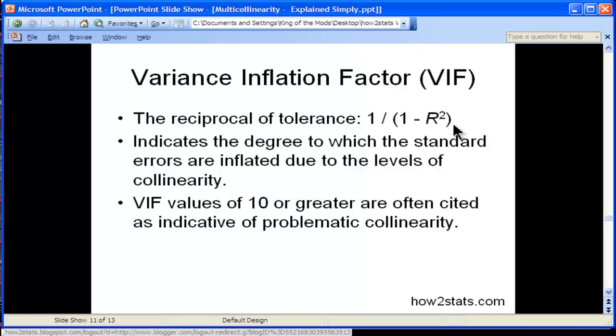VIF values of 10 or greater are often cited as problematic. You can see why that makes sense—in the previous slide, I suggested that 0.10 was a tolerance level used as the rule of thumb. If you take 1 and divide by 0.10, you get 10 as an inflation factor. This means we expect the standard errors to be inflated by a factor of 10 in comparison to the case where there wouldn't be any correlations whatsoever between your independent variables.